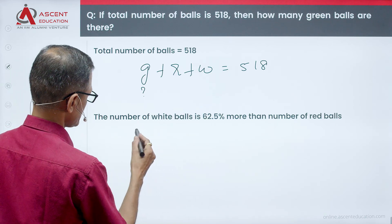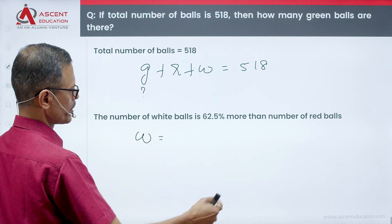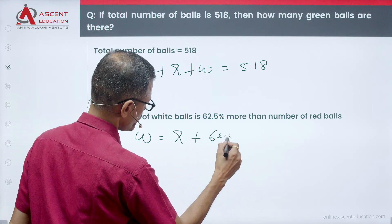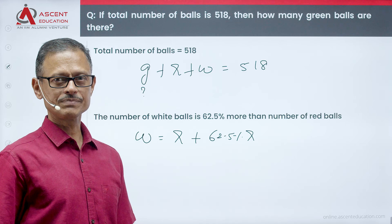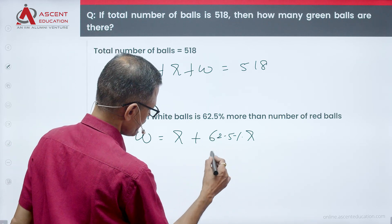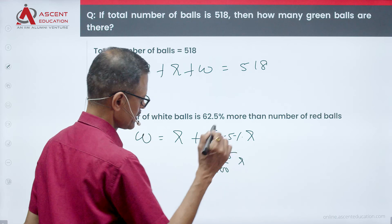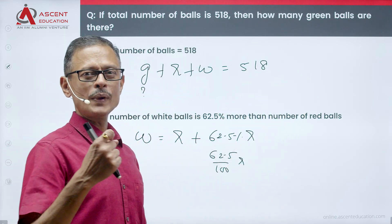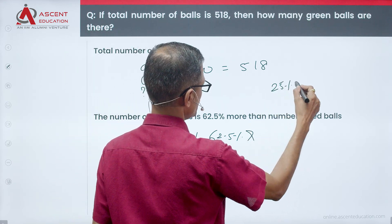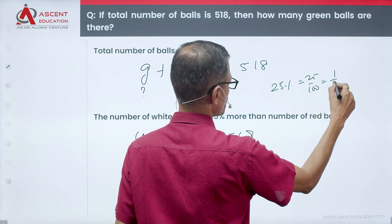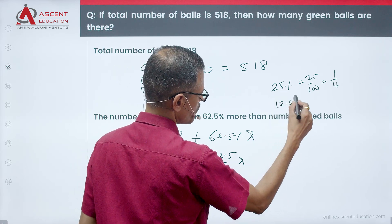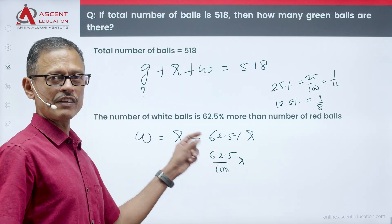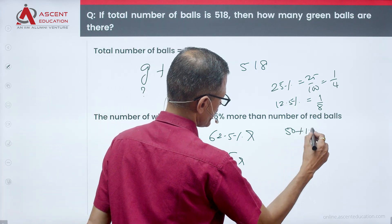In this statement, the number of white balls is equal to 62.5% more than the number of red balls. So, red balls plus 62.5% of red balls. 62.5 divided by 100. If we get this fractionally, we can calculate this. 62.5, we can calculate 25% of that, which is equal to 25 by 100, which will be equal to 1 by 4. So, 12.5% is going to be equal to half of that, which is equal to 1 by 8.